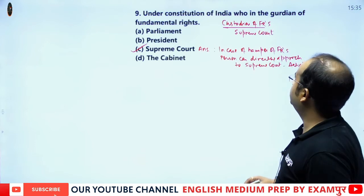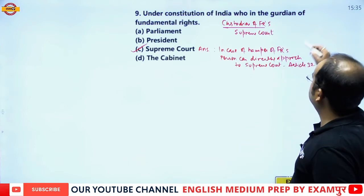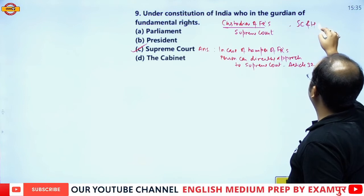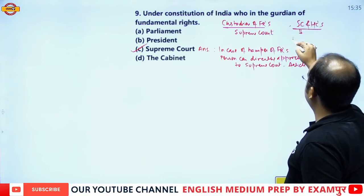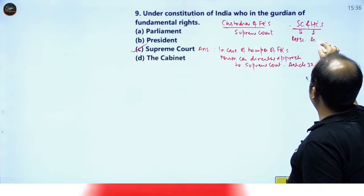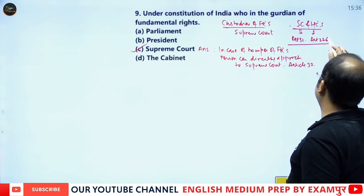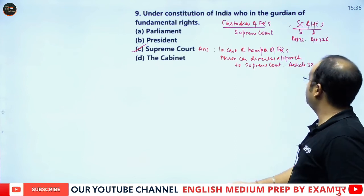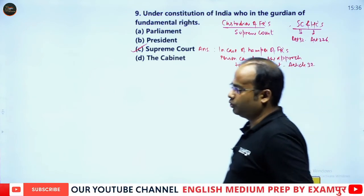Both the Supreme Court and High Courts are guardians of Fundamental Rights. The Supreme Court can issue writs through Article 32, and the High Court can issue writs through Article 226. Therefore, the correct answer is option C, the Supreme Court.